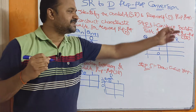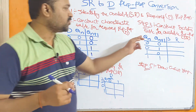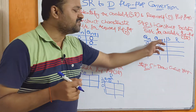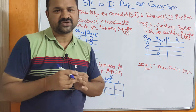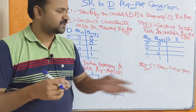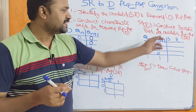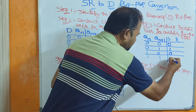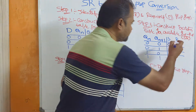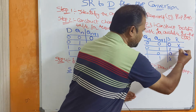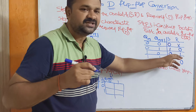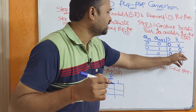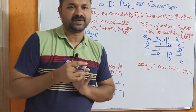Step three is construct the excitation table. Here QN and QN+1 are the inputs, and S and R are the outputs. With two inputs, we have four combinations. In the S column we write 0, 1, 0, and don't care. In the R column it is the reverse: don't care, 0, 1, 0.